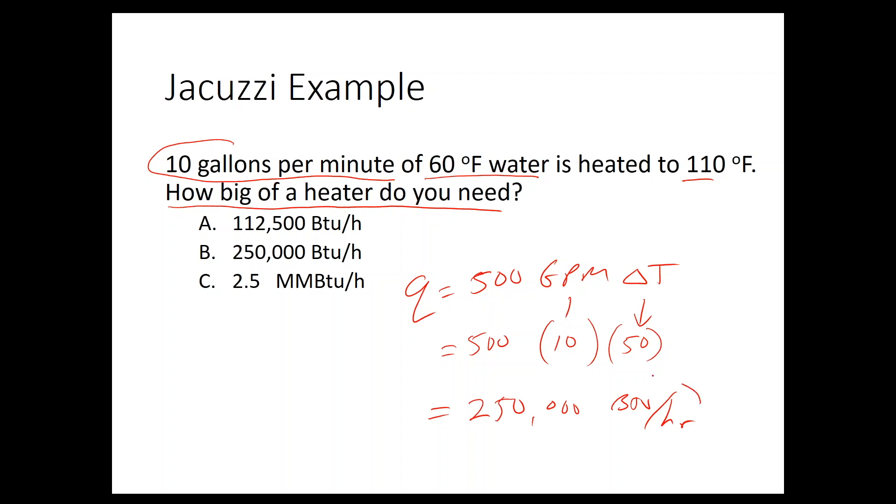By the way, all Q equations are going to have BTU per hour, little q equations. So 250,000 BTU per hour, choice B.